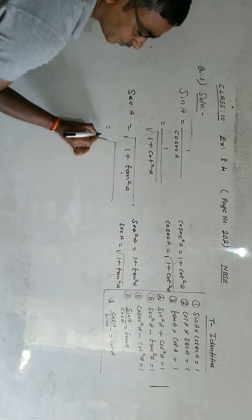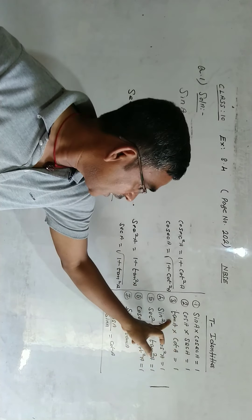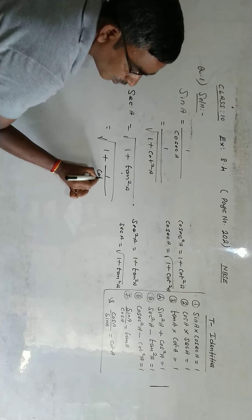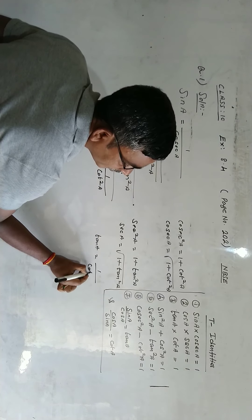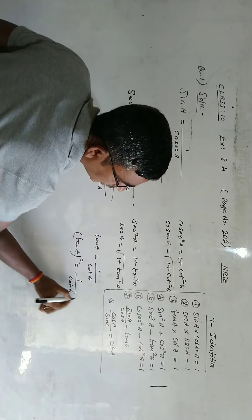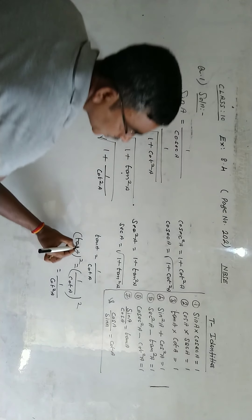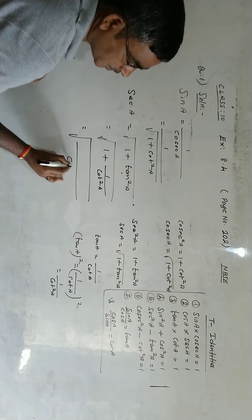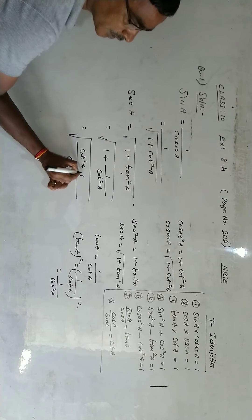Since tan a multiplied by cot a equals 1, we get tan a equals 1 by cot a. In place of tan a, we substitute 1 by cot a. So tan squared a becomes 1 by cot a whole squared, which equals 1 by cot squared a. Taking the LCM as cot squared a, we get root over cot squared a plus 1 all divided by cot squared a.